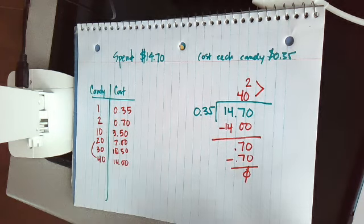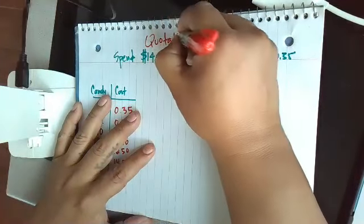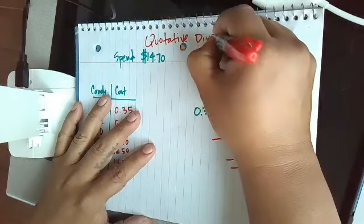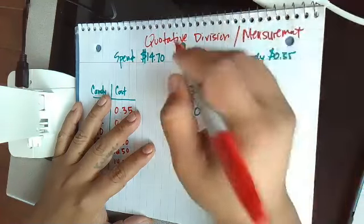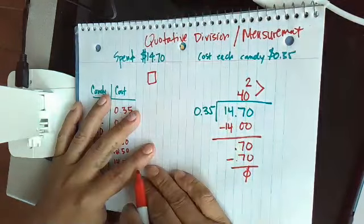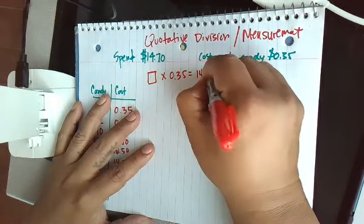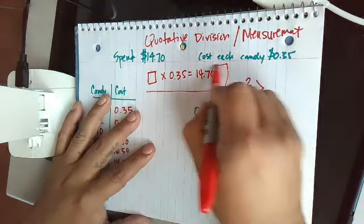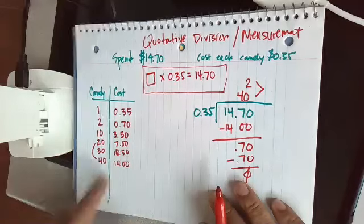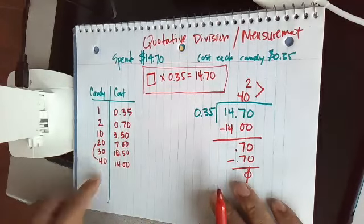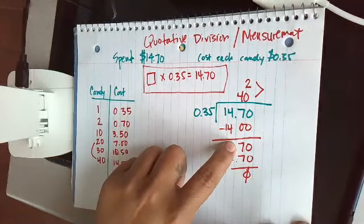So just to review some of the things we did, remember it's quotative division, some people call it measuring out division, measurement division. And this is the one where we don't know our number of candies, but we knew that each candy costs 35 cents and our total was $14.70. When we have this type of unknown, which is the quotient of the division, the ratio table works very well. As you can see, I set up just friendly numbers here, and these help me pull out partial quotients when I do a revised or an adaptive version of the standard algorithm.